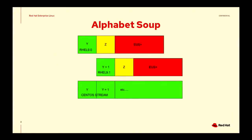I want to start with a little bit of alphabet soup so everybody understands the terms we use, because I think this is a point of confusion for everybody in CentOS. They hear about Y-stream and EUS and Z-stream, and their heads are swimming because they don't understand what these terms actually mean.